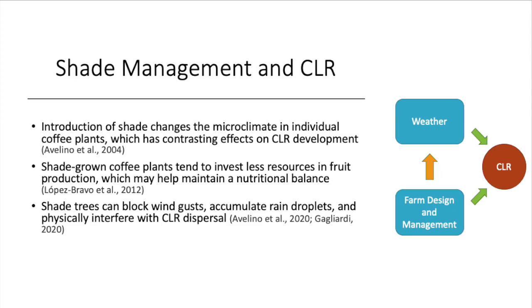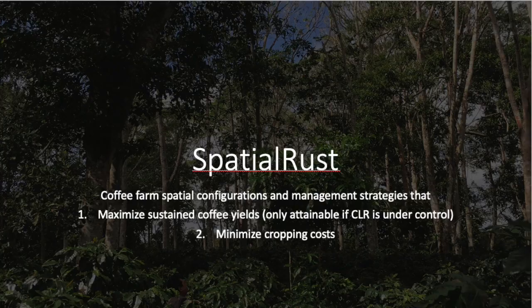Also, shade-grown coffee plants tend to invest less resources in fruit production, which may help maintain a nutritional balance and therefore let them better defend themselves from the disease. And finally, shade trees can block wind gusts, accumulate rain droplets, and physically interfere with coffee leaf rust dispersal.